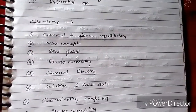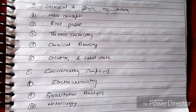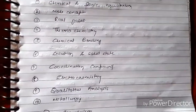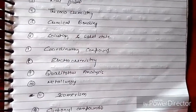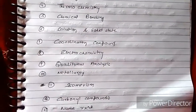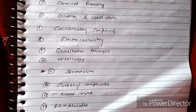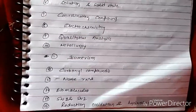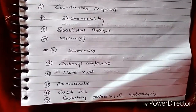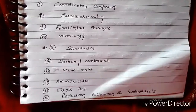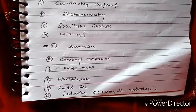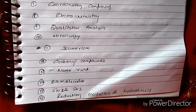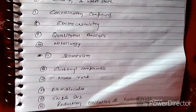Chemistry chapters: chemical and ionic equilibrium, mole concept, real gas, thermochemistry, chemical bonding, solution and solid state, coordination compounds, electrochemistry, qualitative analysis, metallurgy, isomerism, carbonyl compounds, name reactions, biomolecules, SN1 and SN2, reduction, oxidation and hydrolysis.